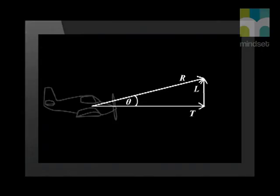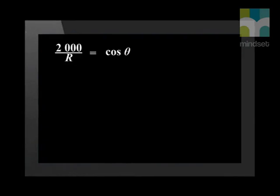And what is the new resultant force, R, on the plane as it climbs? Vector R is the hypotenuse of the right angle triangle. So we want a trig ratio that uses the hypotenuse. That could be sine or cosine. So let's choose the cosine ratio.